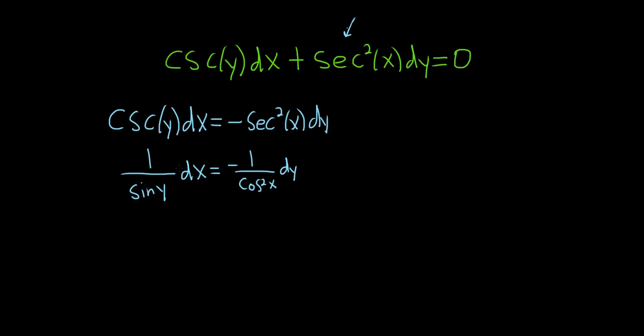Maybe now it's becoming a little more clear. So we can multiply both sides by cos²(x) and by sin(y). So what that will do is it will clear the fractions. So it will put us here: cos²(x)dx. And then over here we'll have negative sin(y)dy.